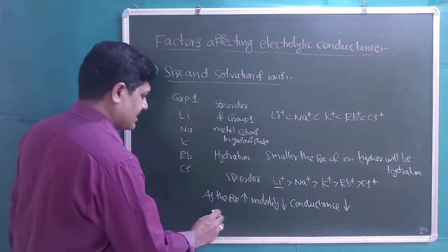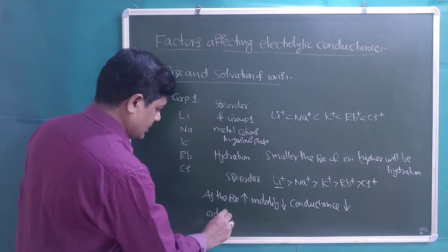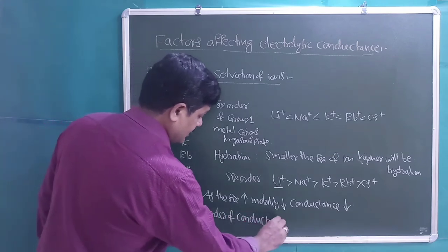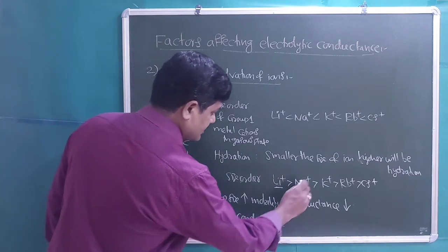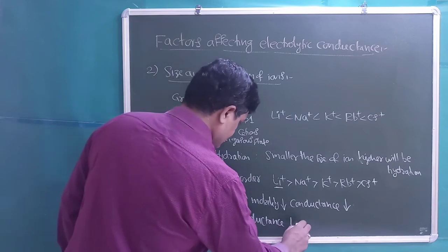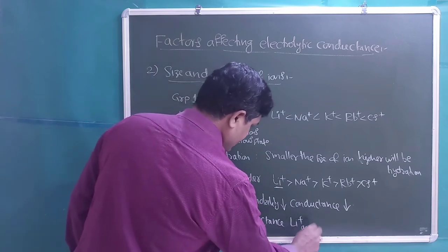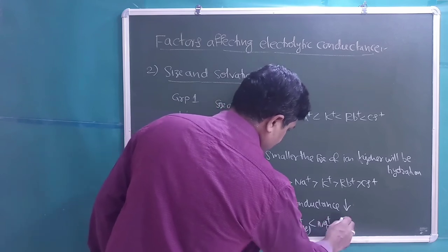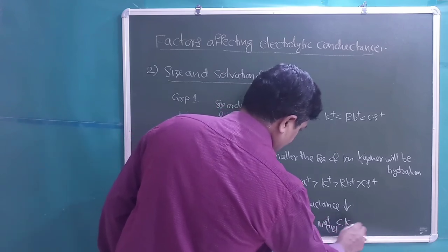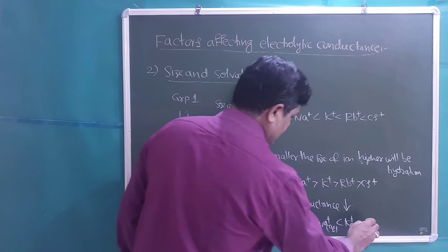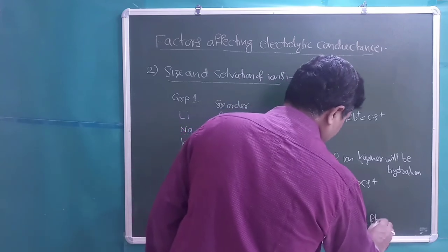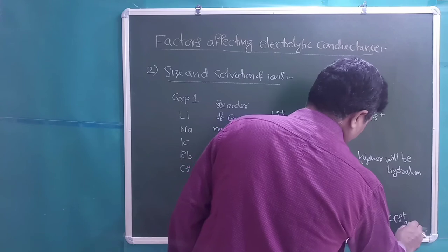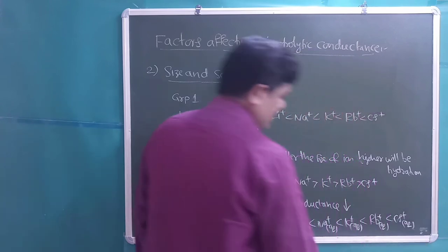So the order of conductance for these cations in aqueous solution is: Li⁺(aq) < Na⁺(aq) < K⁺(aq) < Rb⁺(aq) < Cs⁺(aq).